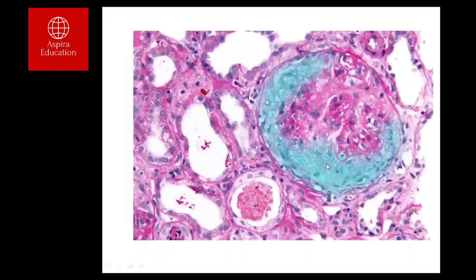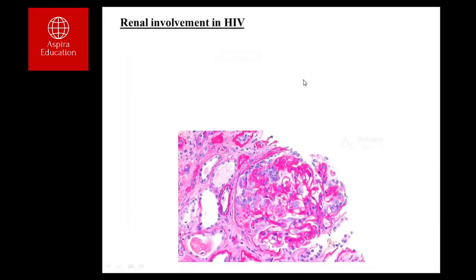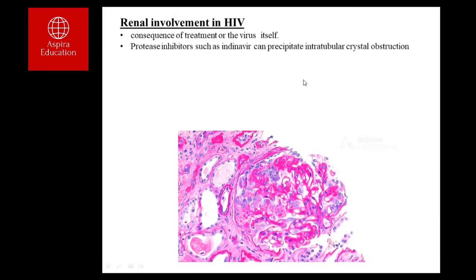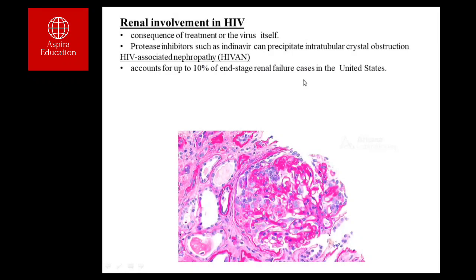Next, we move on to systemic diseases causing renal dysfunction. A common exam topic is HIV. Kidney pathology in HIV patients occurs either due to the virus itself or due to treatment drugs. Protease inhibitors such as indinavir can cause microcrystals within the kidney tubules and obstruct them. A specific entity seen in HIV is HIV-associated nephropathy, also called HIVAN.